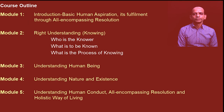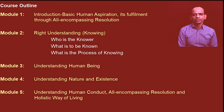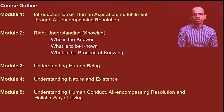Looking at the course outline: Module 1 is dedicated to introducing the course — we'll talk about the basic human aspiration and its fulfillment through all-encompassing resolution. In Module 2 we'll talk about right understanding — we'll be able to see who is the knower, what is to be known, and what is the process of knowing. In Module 3 we'll discuss human being in more detail. In the previous course we talked about some activities of the self; now we'll talk about all the activities of the self and see how harmony can be ensured in the self.